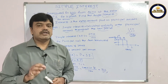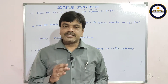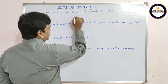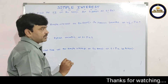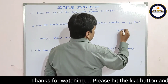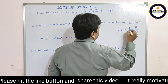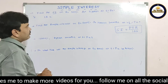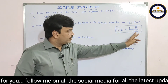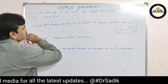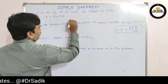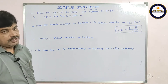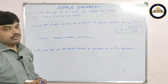Let us see some problems on simple interest. Problem 1: Find the simple interest on rupees 500 for five years at 6% per annum. SI = P × T × R / 100. P = 500; dividing by 100 cancels two zeros, leaving 5. Then 5 × T (5) × R (6) = 5 × 5 × 6 = 150... giving 300 rupees. The simple interest is 300 rupees. Solve directly without writing all steps to finish within one minute.